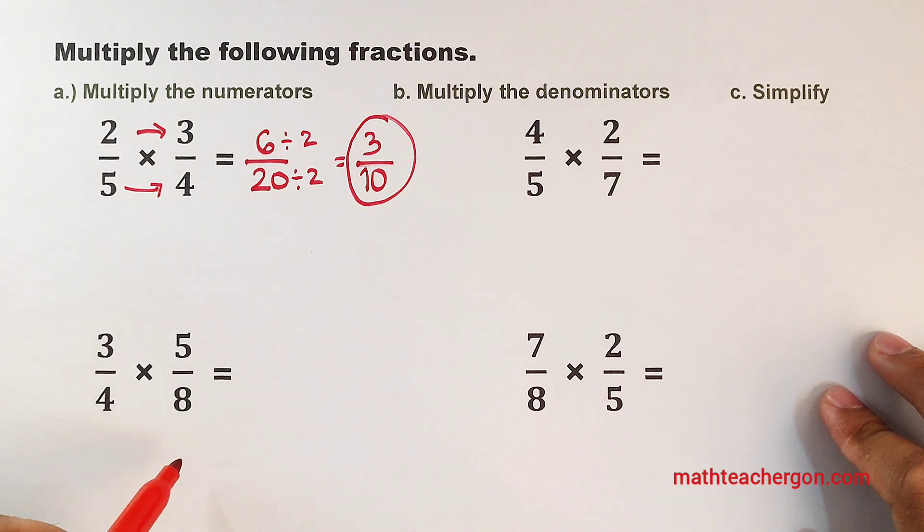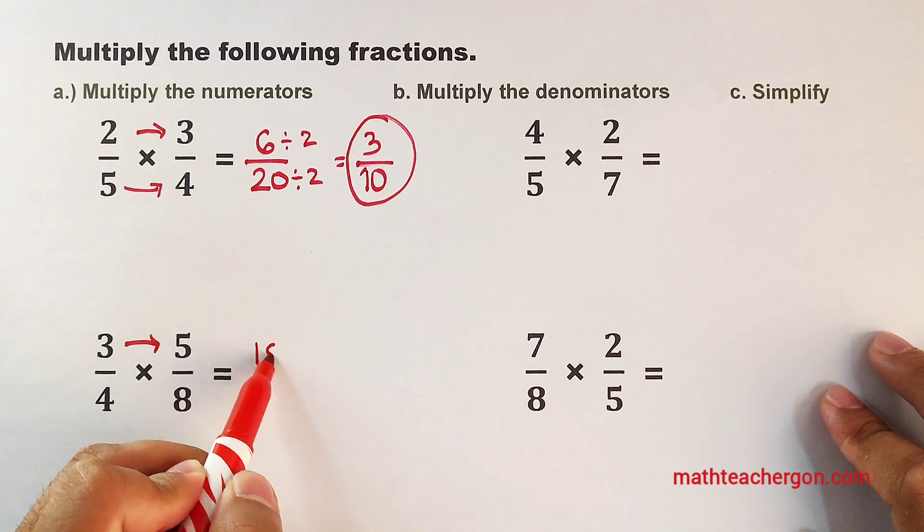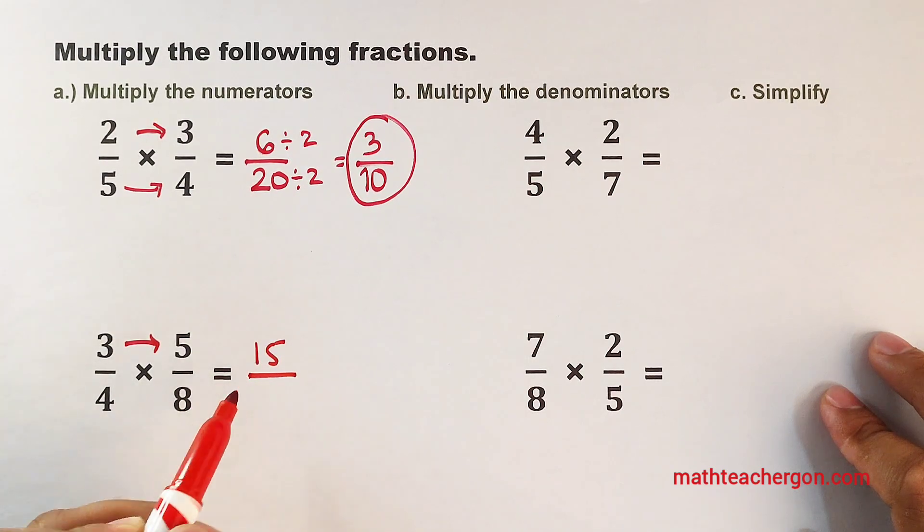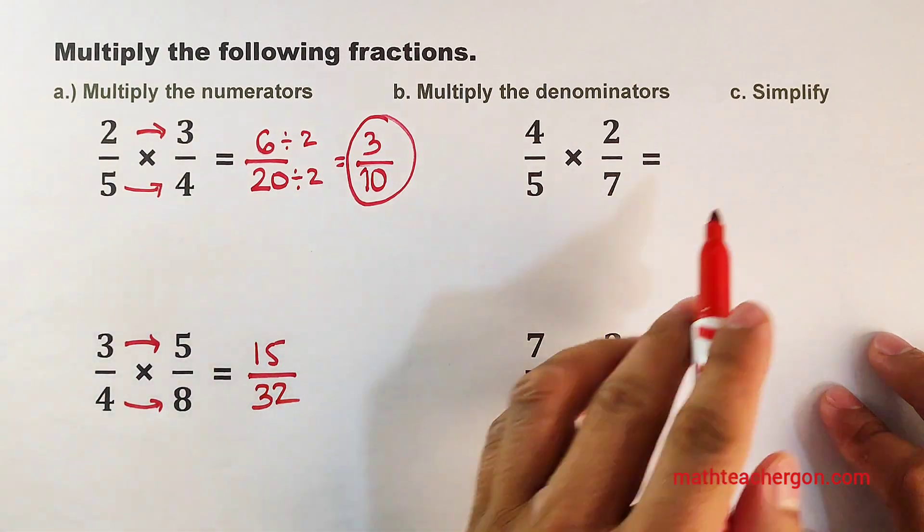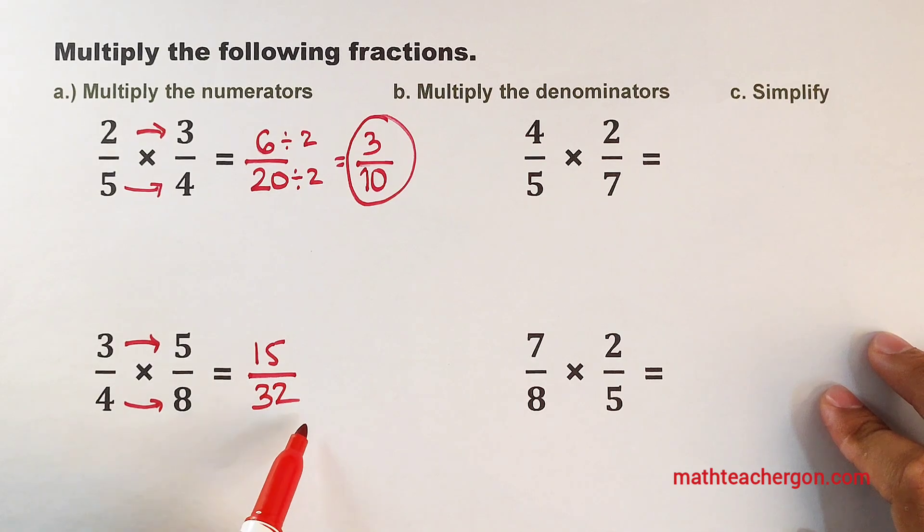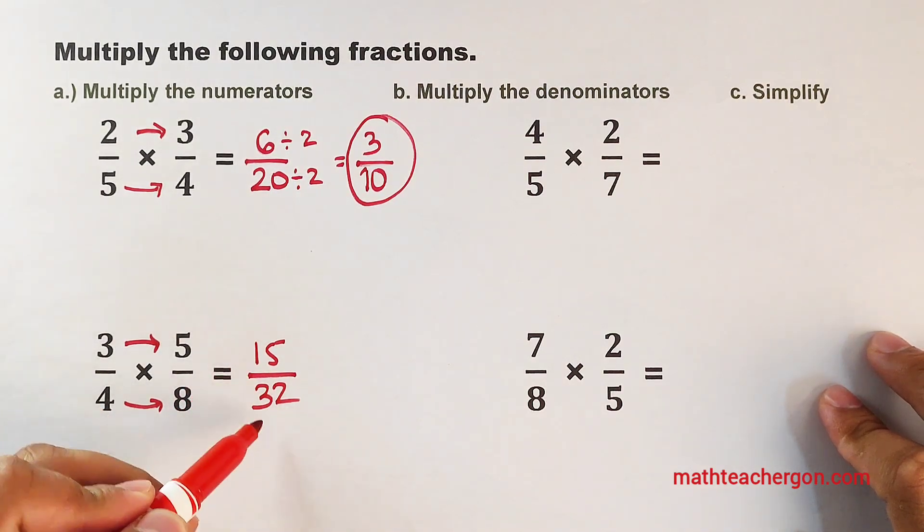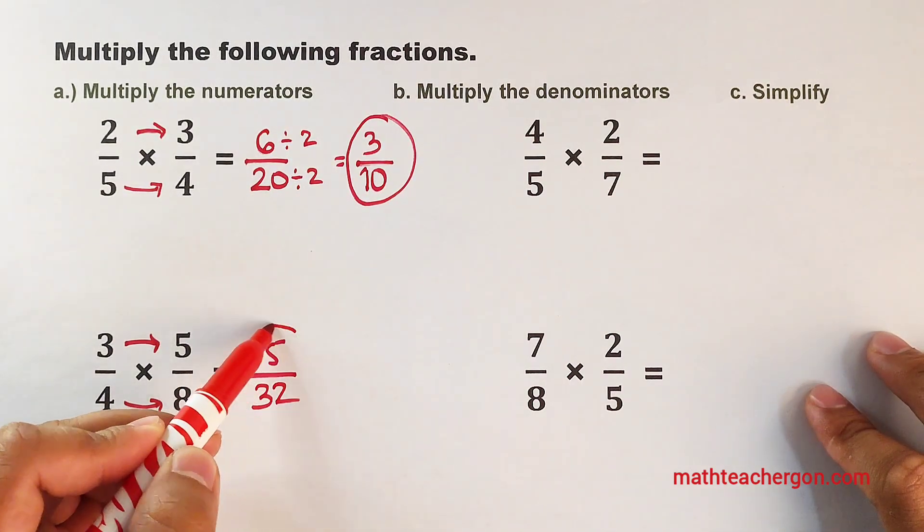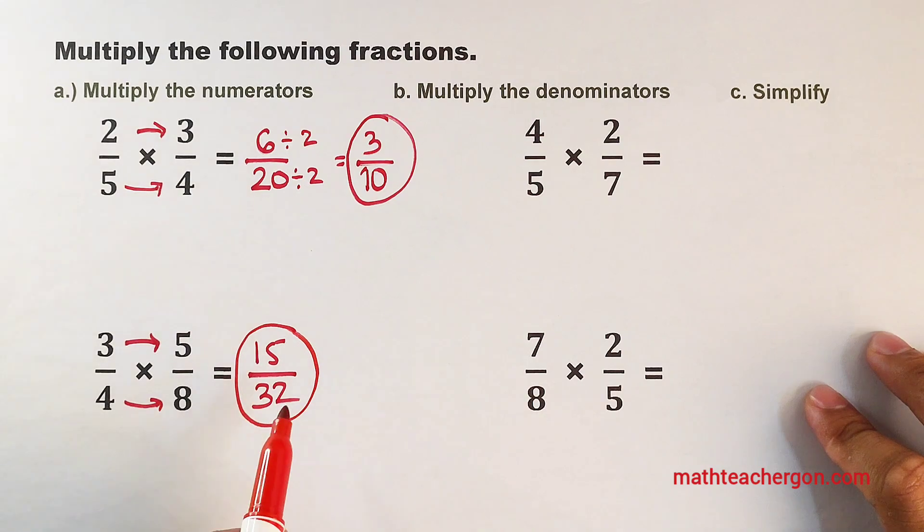Now let's multiply 3 over 4 and 5 over 8. Multiply the numerators. 3 times 5, that would be 15 over, multiply the denominators, 4 times 8, that would be 32. Then let's see if we can still simplify this fraction. 15 over 32. In this case, guys, this one is already in lowest term or simplified form.